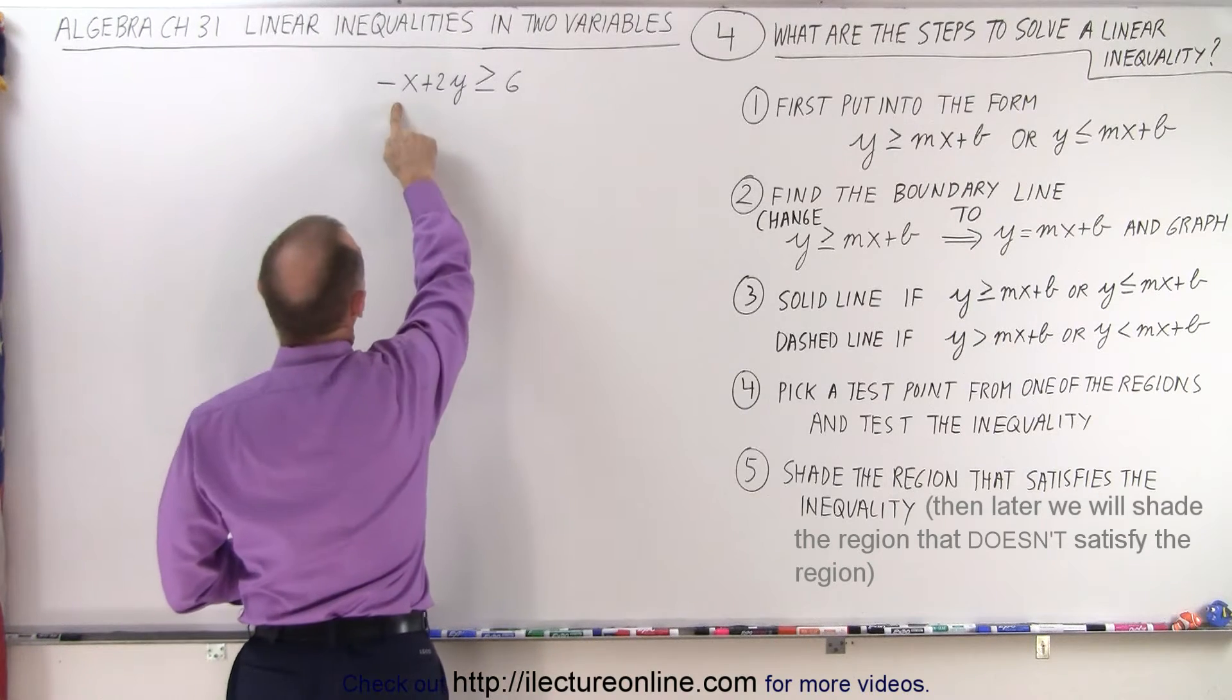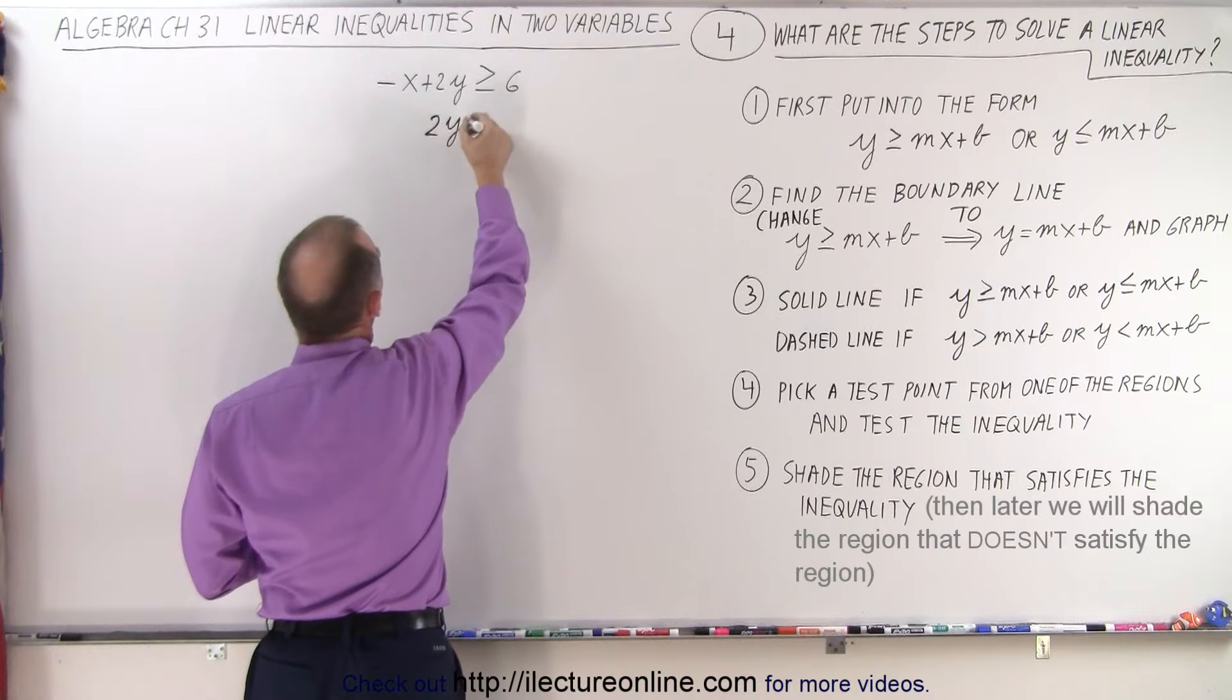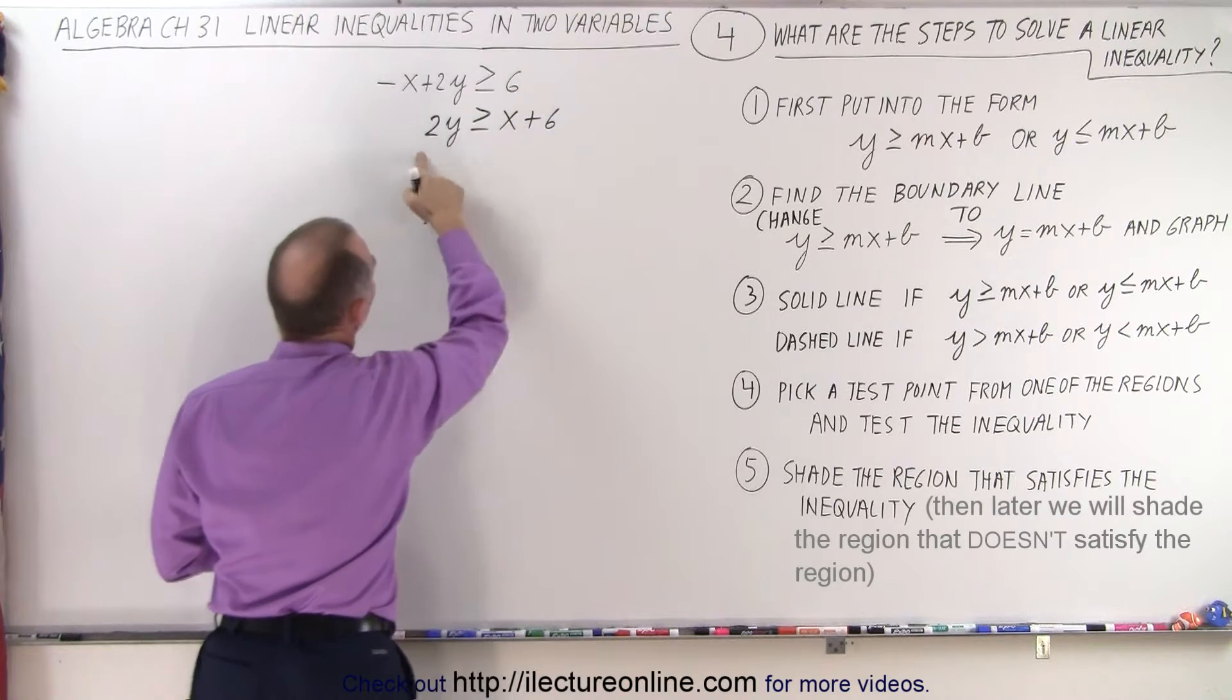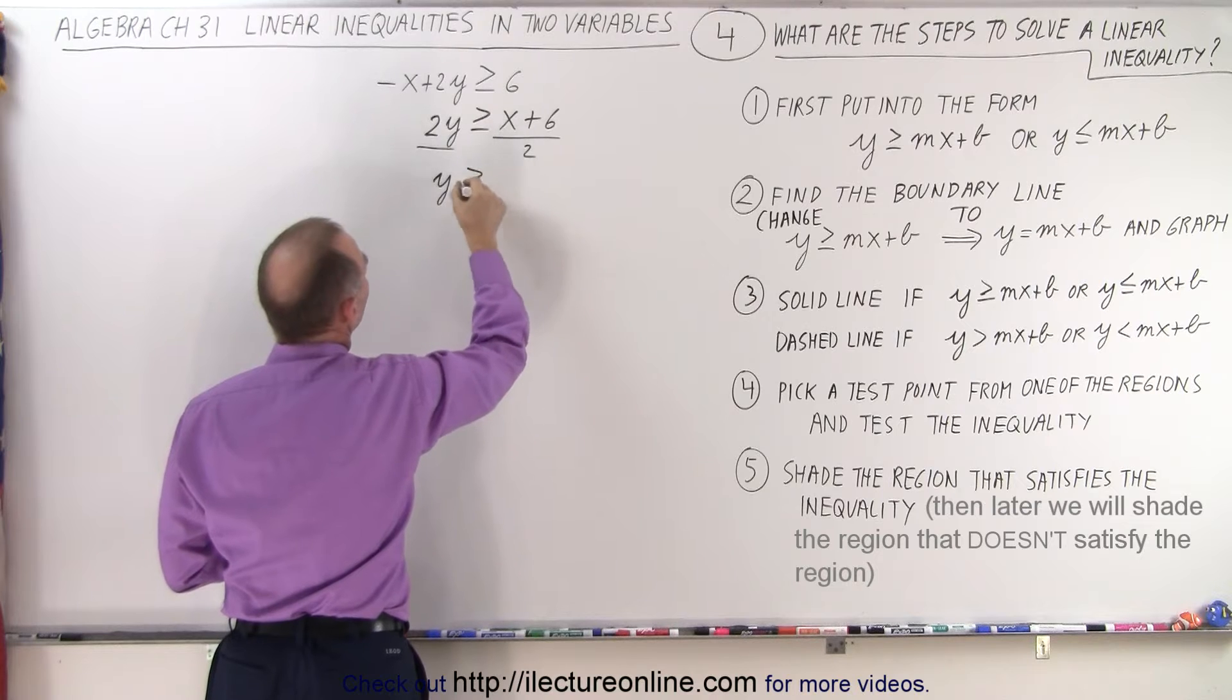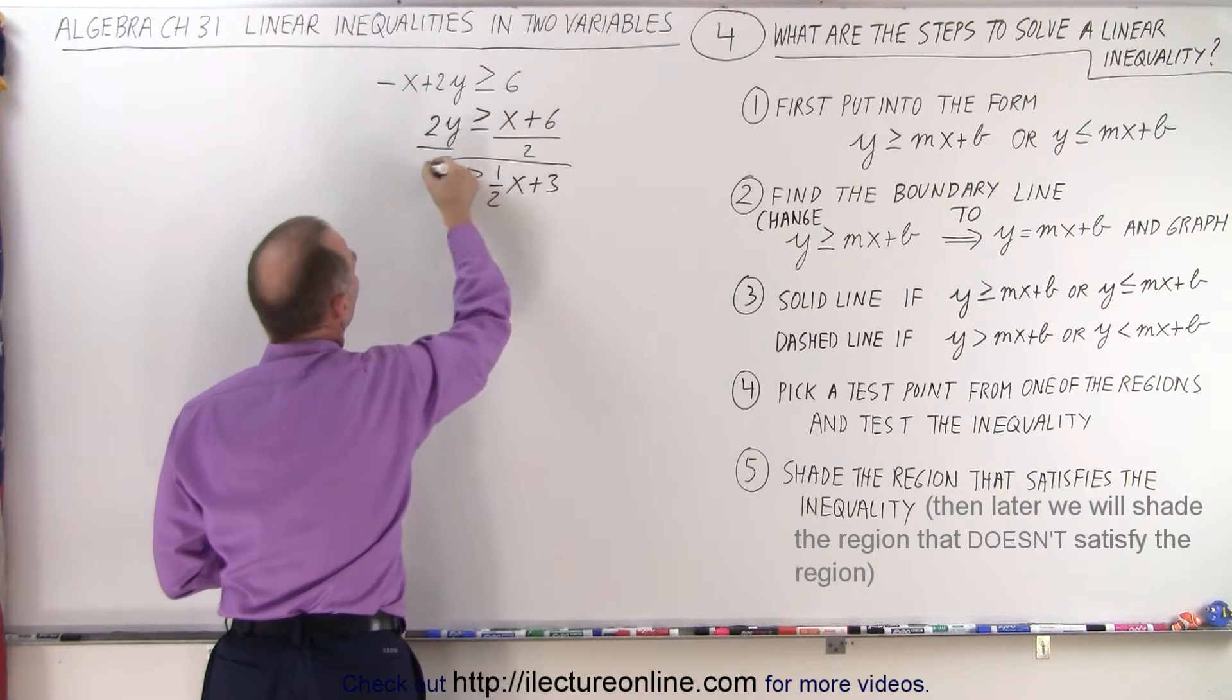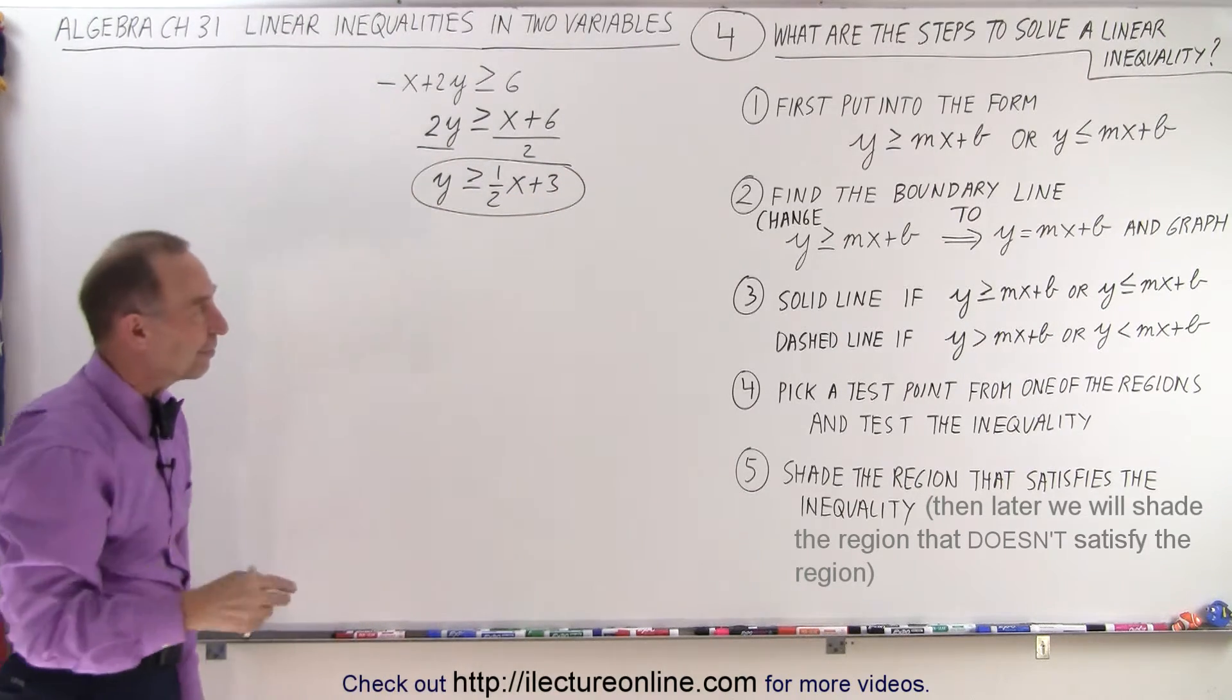So what do we do here? First of all, move the minus x to the other side, becomes plus x, so we have 2y greater than or equal to x plus 6. And then if we divide both sides by 2, divide the left side by 2, divide the right side by 2, we get y is less than or equal to 1 half x plus 3. So there is the very same expression, just simply in a different format.